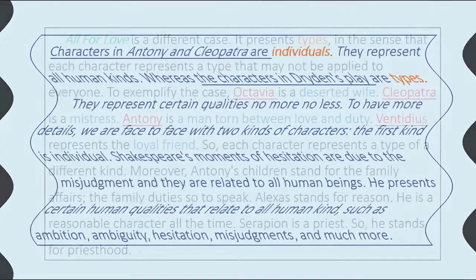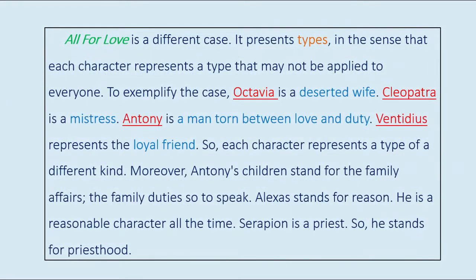All for Love is a different case. It presents types, in the sense that each character represents a type that may not be applied to everyone. For example, Octavia is a deserted wife, Cleopatra is a mistress, Antony is a man torn between love and duty, and Ventidius represents the loyal friend. Each character represents a type of a different kind.